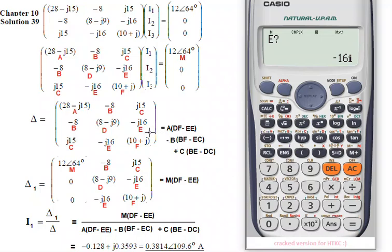E minus J16. So minus J16. So minus 16I. Equal sign. A. 28 minus J15. So 28 minus 15I. Equal sign. B. Minus 8. Minus 8. Equal sign. C. J15. So 15I. Equal sign.